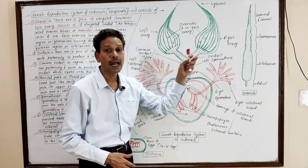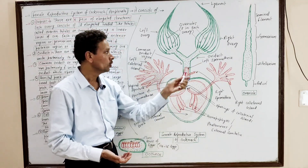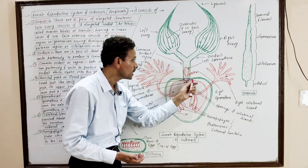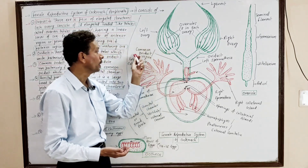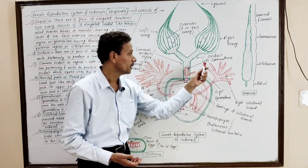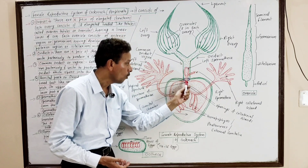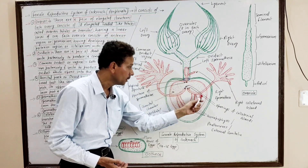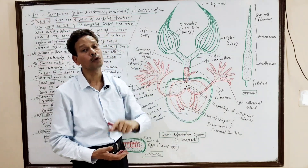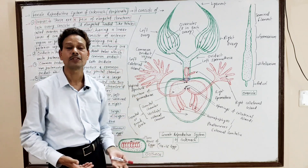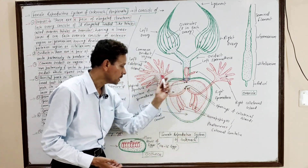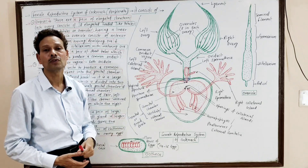Both the right and left oviducts unite posteriorly to produce a common oviduct, which is also called the vagina. This common oviduct opens into a chamber called the brood chamber, or genital chamber, which contains a brood pouch.